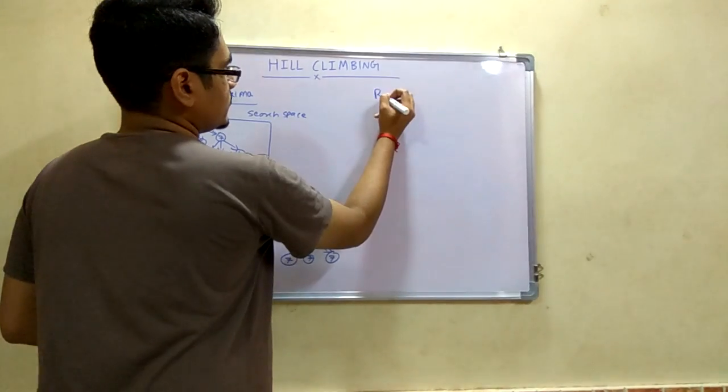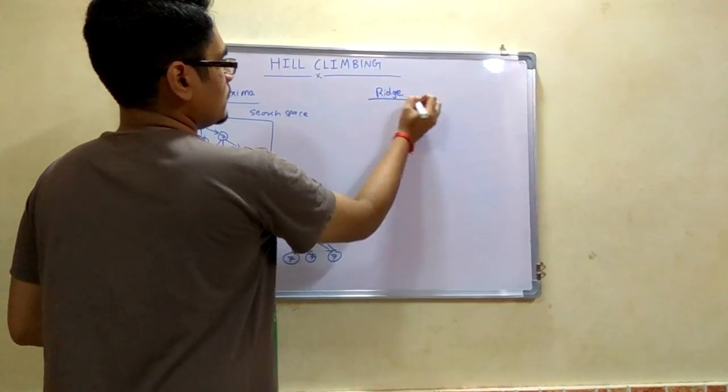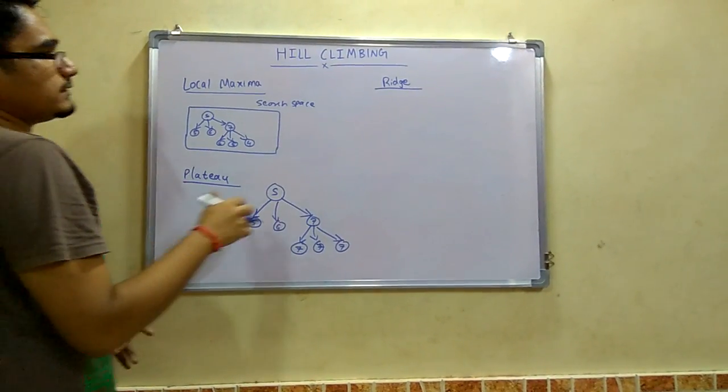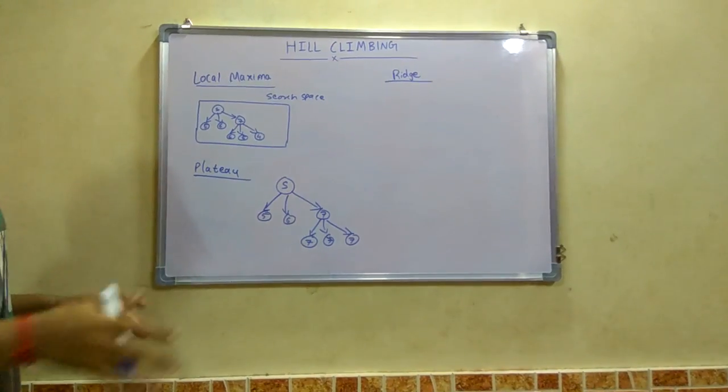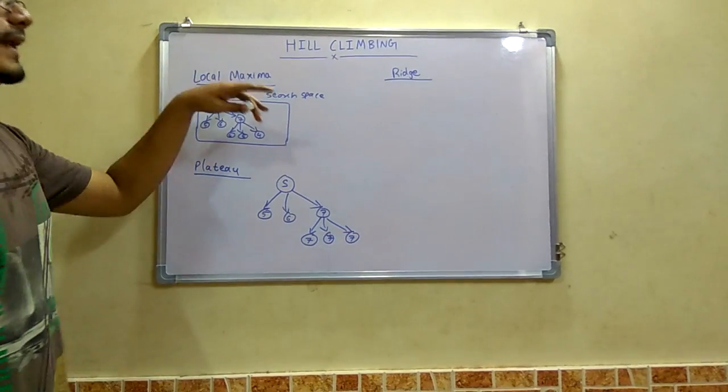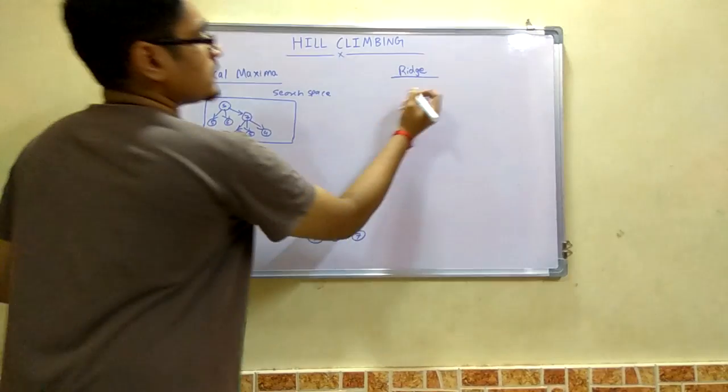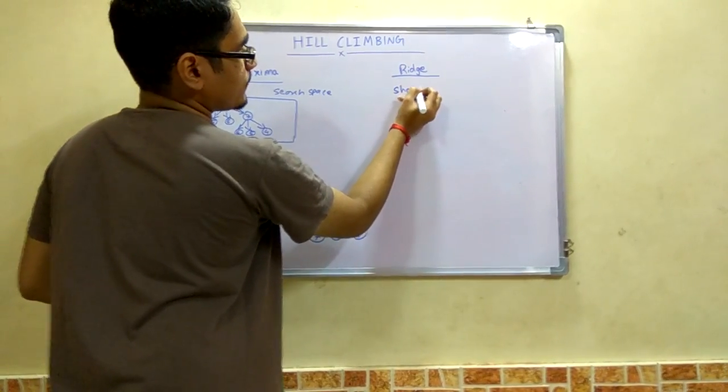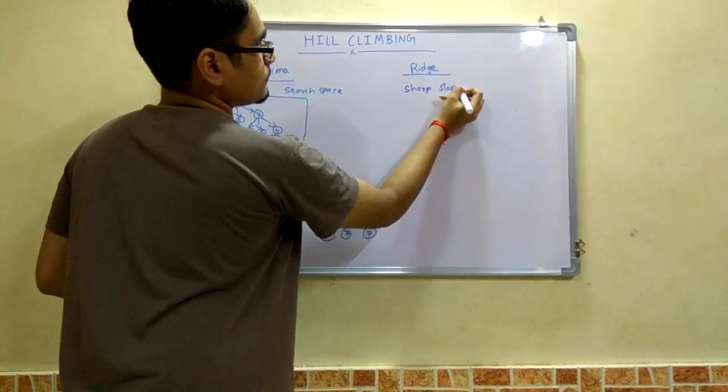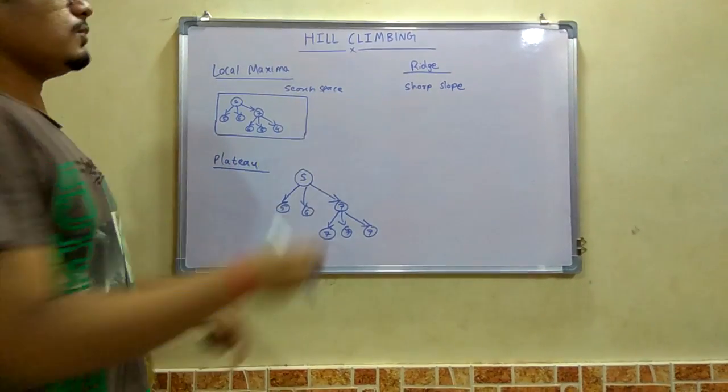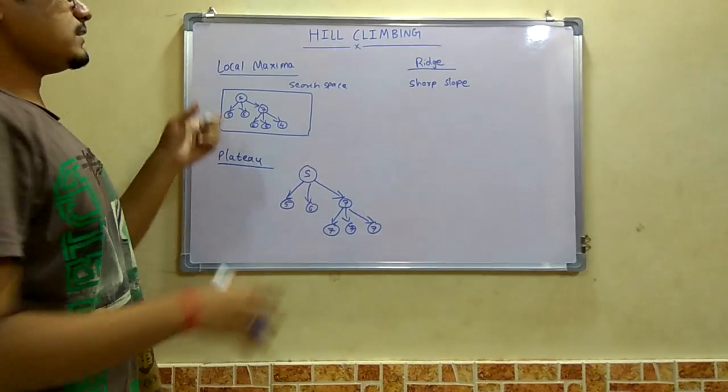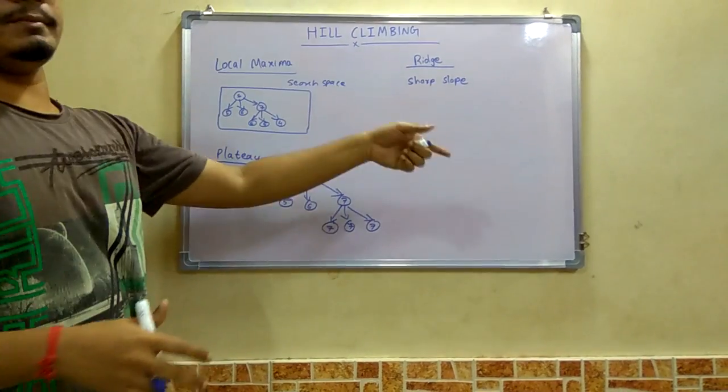Next is ridge. Ridge is a special case of local maxima. The specialty of ridge, or the difference between local maxima and ridge, is that ridge has a sharp slope by which we can distinguish between them.